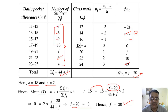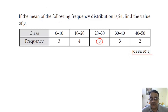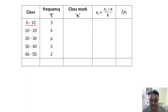Now we'll move to the next question — one more missing frequency question. This is a CBSE 2013 question: if the mean of the following frequency distribution is 24, find the value of p. The class mark of the first class is 5, and the class size is 10, so class marks are 5, 15, 25, 35, 45.